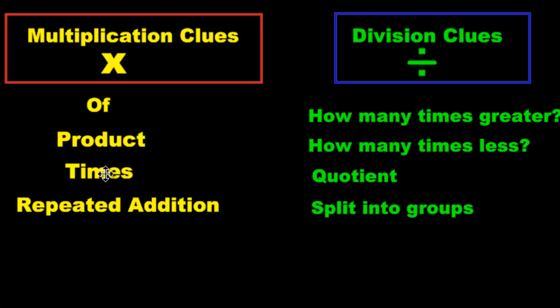Now we're going to move on to multiplication and division clues. Multiplication clues include the following. We have the word of. Yes, of is a very big indicator of multiplication. I'll show you where the word of would kick in to mean multiplication. Not just any word of in a sentence would refer to multiplication. It has to be used in a very specific way. Product, that always means multiplication. Times, repeated addition.